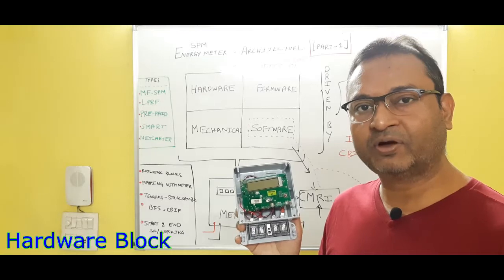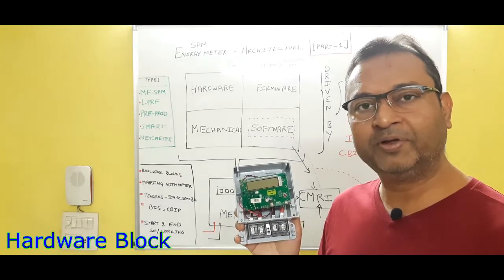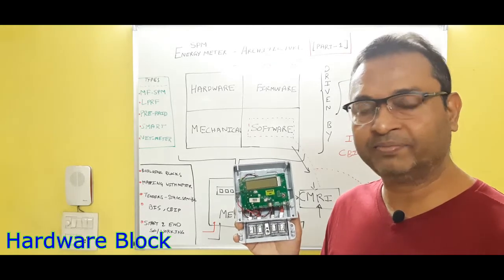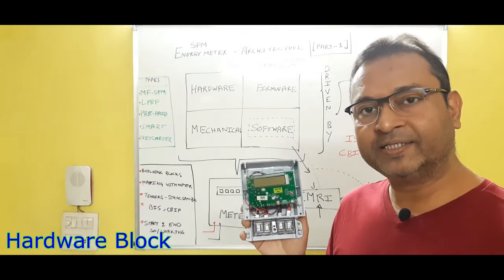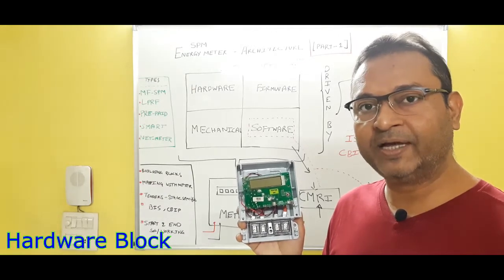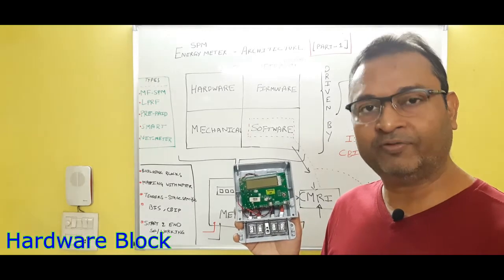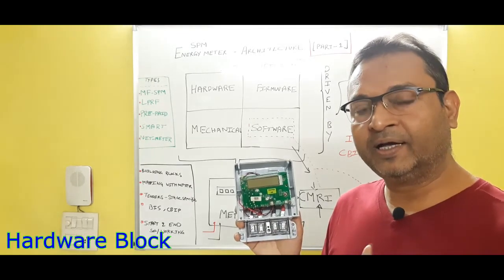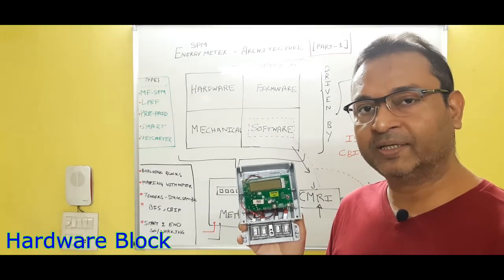The hardware section majorly consists of one block which is the power supply block. Power supply may be your capacitor power supply or SMPS power supply. The second block is your current sensing elements. Current sensing elements may be your shunt, current transformer, or your hall effect sensor.